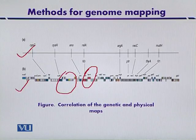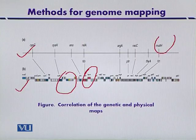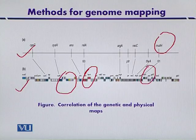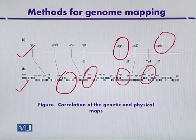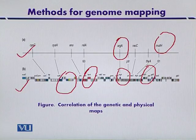Comparing the two maps, we can see that certain genes in the linkage map are at the same position as on the physical map. We can therefore conclude that the linkage maps developed earlier are showing similarity with the physical maps.